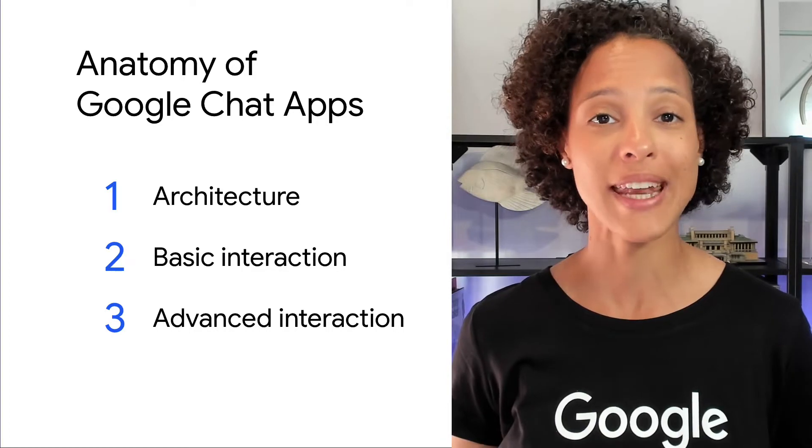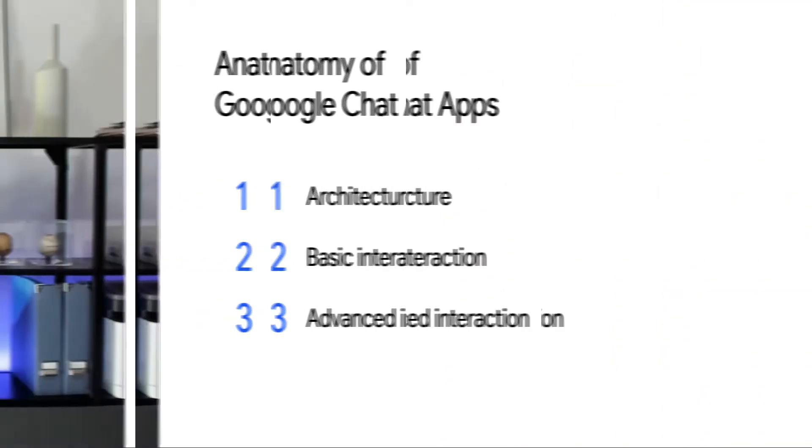This is the first of a series of three videos that cover the anatomy of Google Chat apps. A Google Chat app is made up of two separate parts: the chat app service, which is part of Google Chat itself, and the chat app's logic. In this video, we will use the term Google Chat and chat app, or simply app, to differentiate the two.